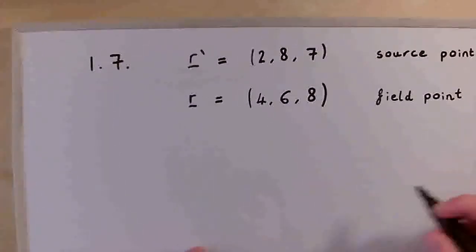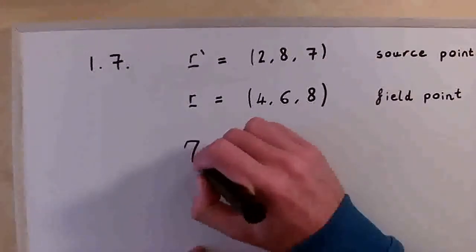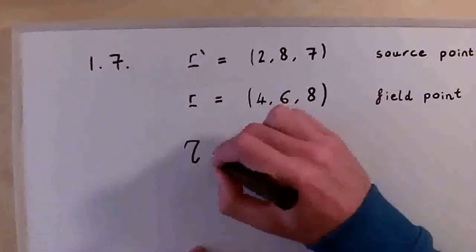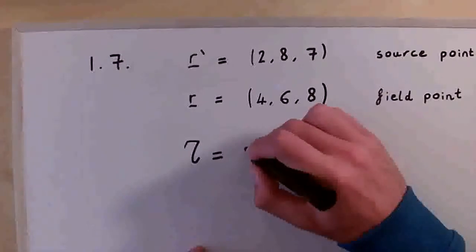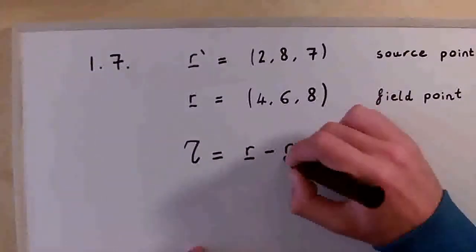So we have the separation vector, which is denoted like this, and this is equal to R minus R prime.